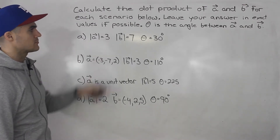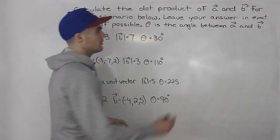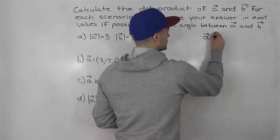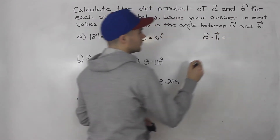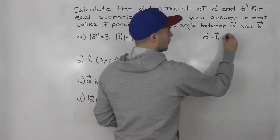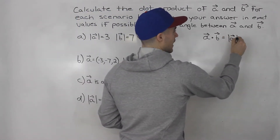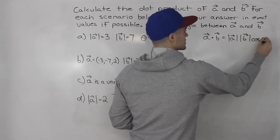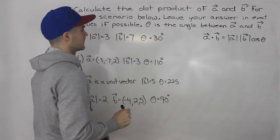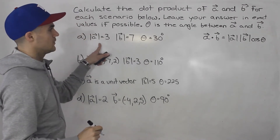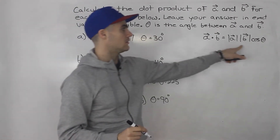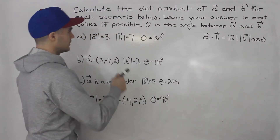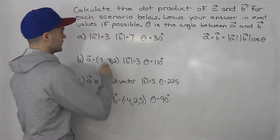So let's start off with part A. We know that the dot product between two vectors — one way to calculate it is the magnitude of A times the magnitude of B times cos of the angle in between. Notice for part A, we are given all of these expressions, so we can just simply plug all of this into that formula.